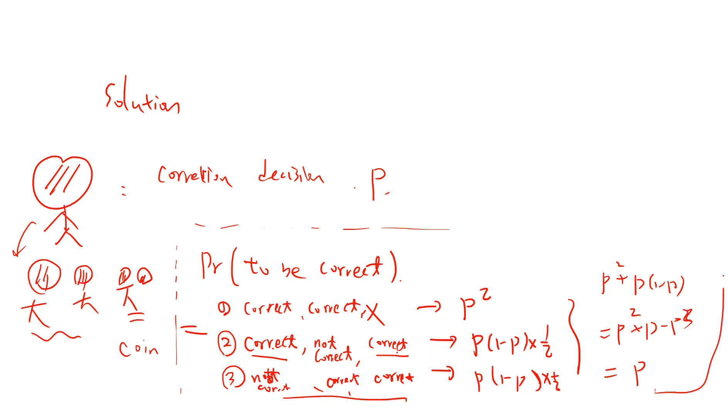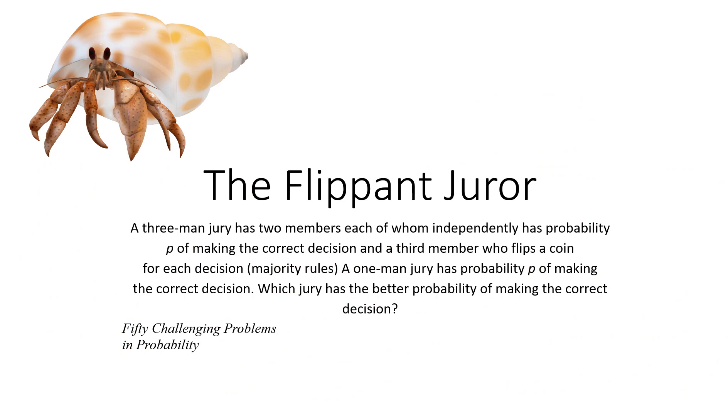The results are the same. This is why I think this problem is interesting - when you do the simple calculations, you can see they are the same. So which jury has a better probability of making the correct decision? The answer is the same - both have probability p.